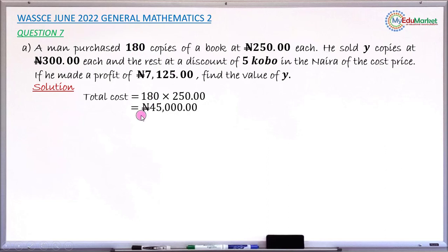Now find the total sales. In the sale, we have two categories. Some part of this 180 are sold at 300 naira, while the remaining are sold at a discount of 5 kobo in the naira. 5 kobo in the naira means 5 kobo in every 100 kobo. So the discount is 5%, which is 5 over 100. This discount is on the cost price, not the selling price. So to find the rate at which the remaining books are sold, you take away 5% from the cost price of 250.